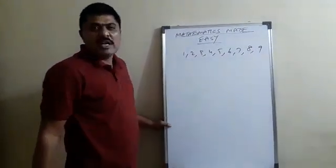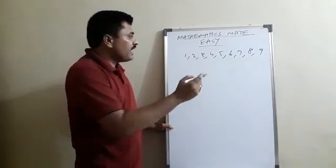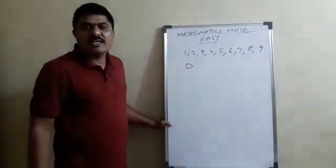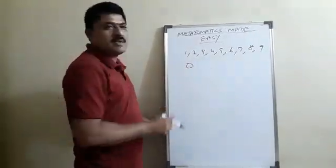These numbers we are using as digits in mathematics. Here, to make a two-digit number, we are adding one more number that is 0. To represent any number in mathematics.